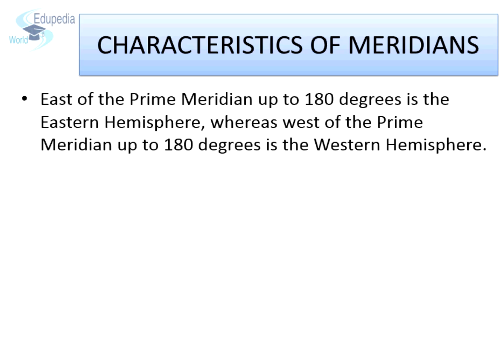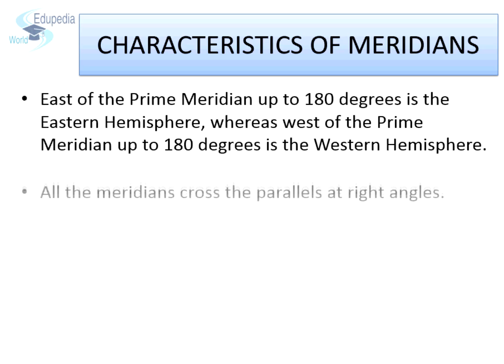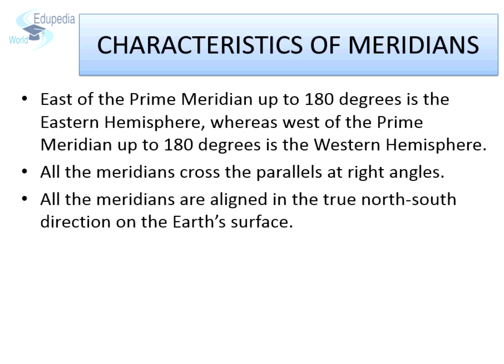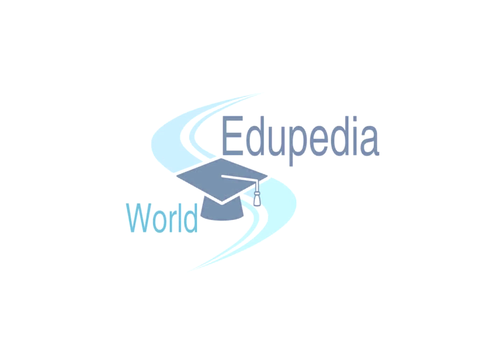East of the prime meridian up to 180 degrees is the eastern hemisphere, whereas west of the prime meridian up to 180 degrees is the western hemisphere. All the meridians cross the parallels at right angles, and all the meridians are aligned in the true north-south direction on the earth's surface. That was all for this session. In the next session, we will focus on the relationship between lines of longitude and time. Don't forget to watch. Thank you.